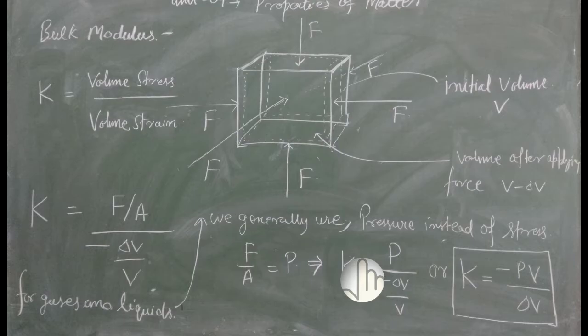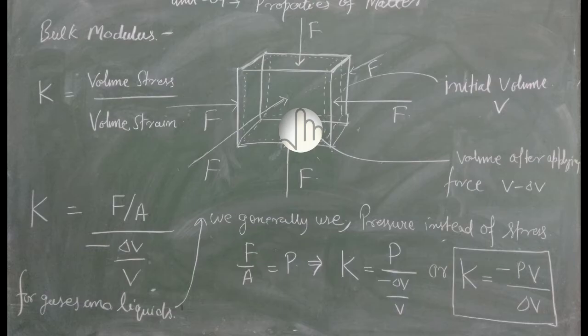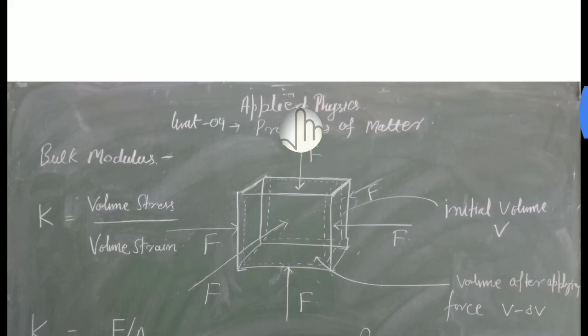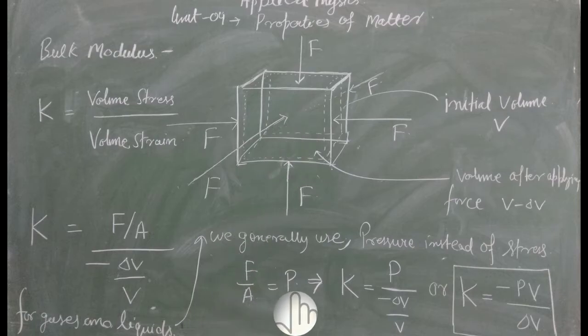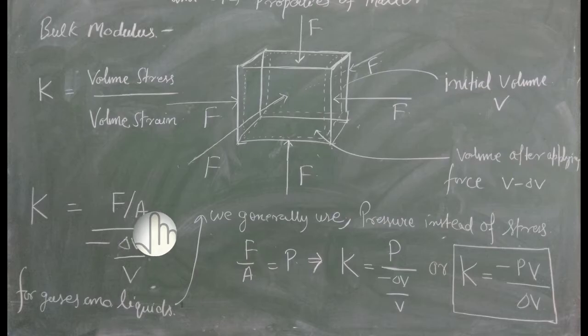لیکن اس میں basic فرق ہے کہ pressure کسی بھی object کے اوپر ایک کانگ چھتر پر لگنے والا لمبوبت بل ہوتا ہے۔ Stress کئی پرکار ہو سکتا ہے — وہاں پر ضرور نہیں کہ بل لمبوبت ہو۔ لیکن اس condition میں stress term pressure کے برابر ہو جاتی ہے، جب gas اور liquid کی بات کریں۔ تو F upon A جو term ہے stress، اس کو pressure کے برابر رکھ دیا ہے۔ Bulk modulus K is equal to: F upon A is equal to p، تو یہاں پر p رکھ دیا اور یہاں پر minus delta V upon V۔